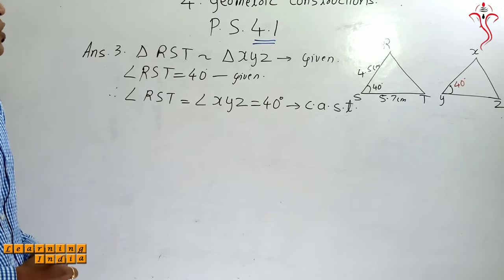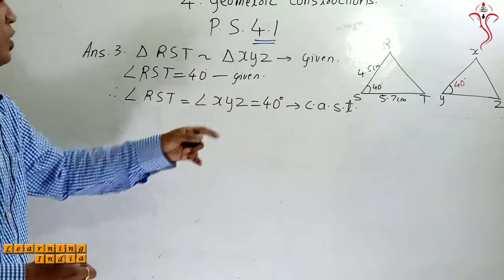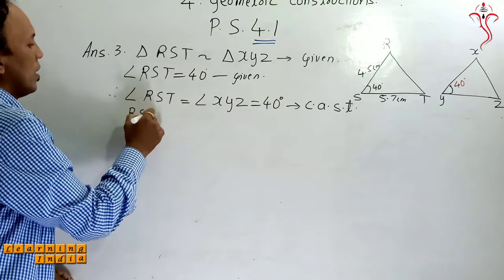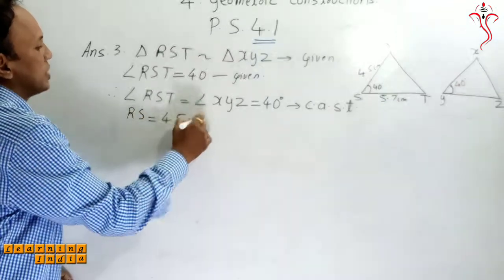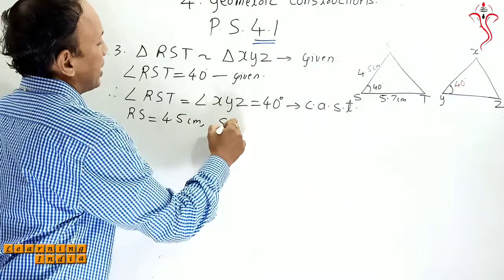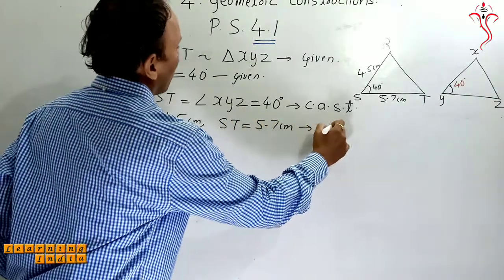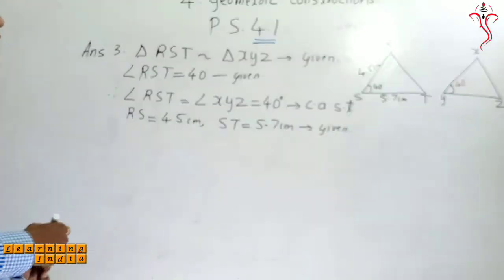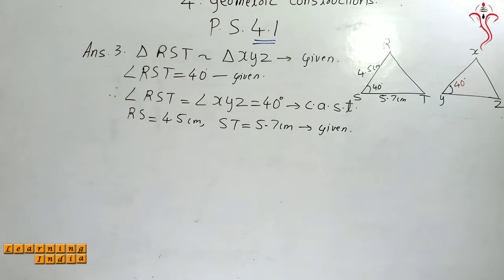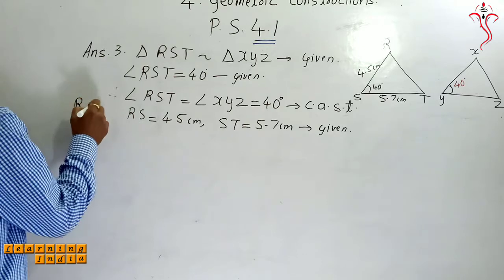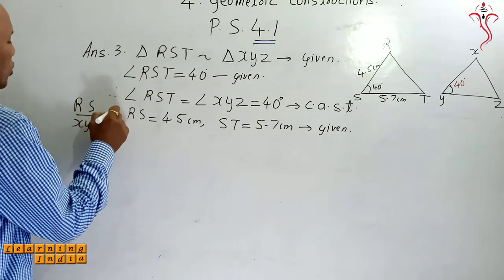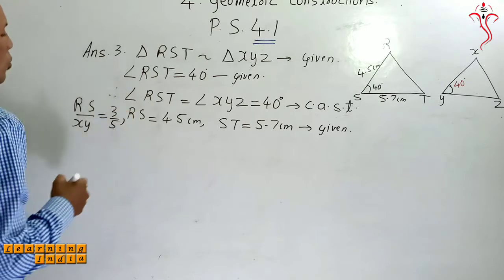Now what is being given to you all? RS is equal to 4.5 cm and ST is equal to 5.7 cm. Plus they have given you the ratio also. What is the ratio? RS upon XY is equal to 3 upon 5.